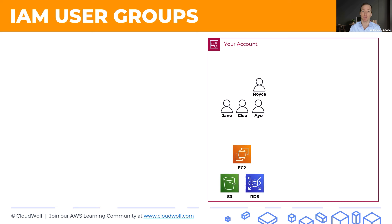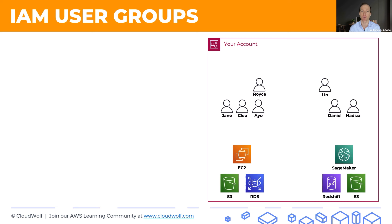The developers need access to S3, the simple search service, EC2, and RDS. On the other hand, we have another team inside our organization — these are data scientists, and they need access to Redshift, SageMaker, and S3.